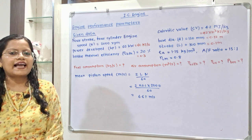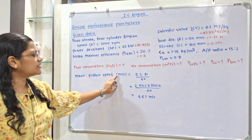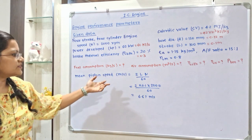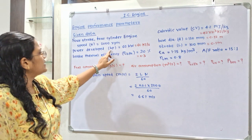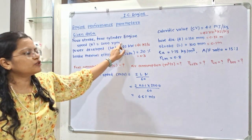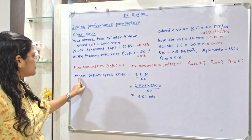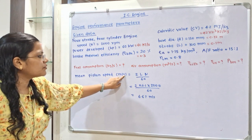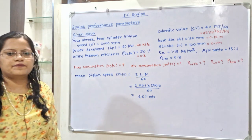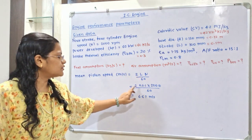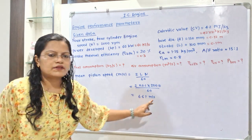Next, we calculate mean piston speed, which has units of m/s. The formula is 2LN, where N is in RPM, so we divide by 60: mean piston speed = 2 × 0.1 × 2000 / 60 = 6.67 m per second.